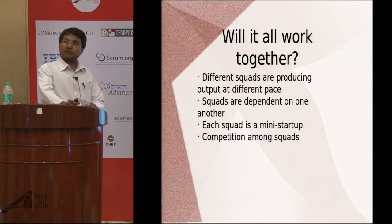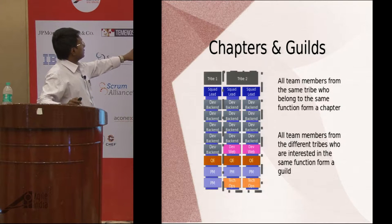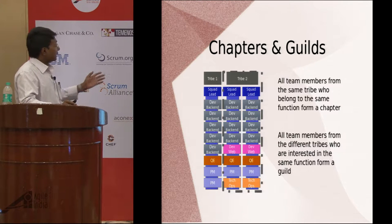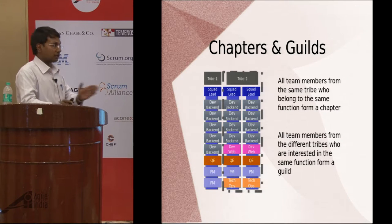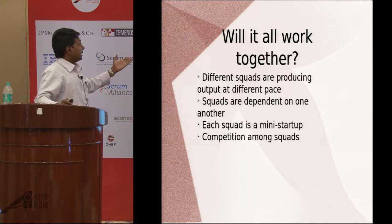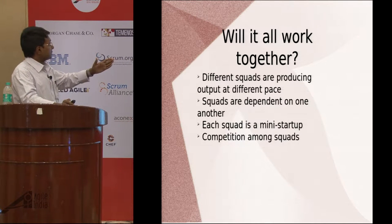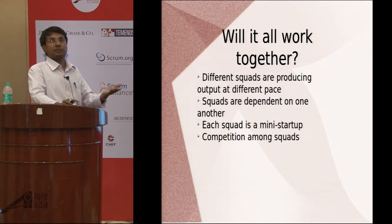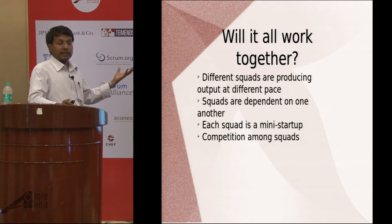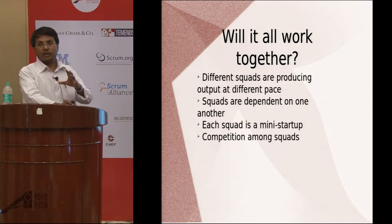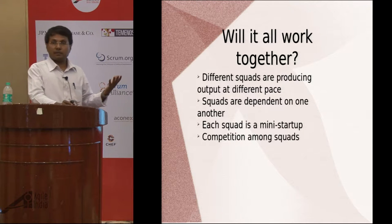The big question is: will it all work together? You have groups of people working on their part of the software, taking care of full front-to-back operations with minimal cross-squad communication. It actually works because different squads produce output at different paces, squads are dependent on one another, each squad is a mini startup, and competition among squads helps product development. This highly aligned and loosely coupled model works for organizations where the software architecture allows for this kind of independence.